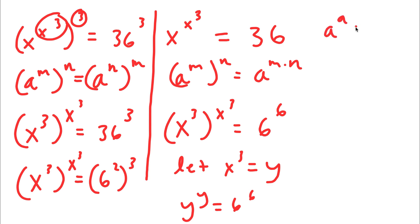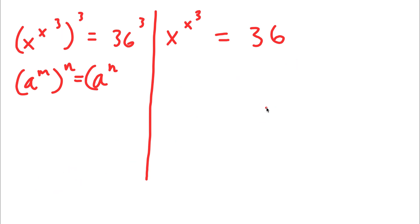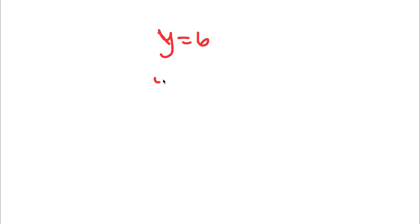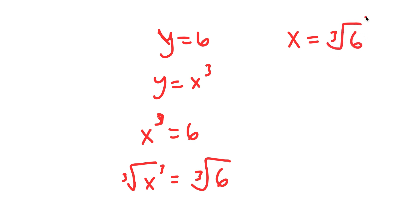If a to the power of a equals b to the power of b, then a equals b. So in this case y equals 6. Remember that y is also equal to x to the power of 3, so x to the power of 3 is equal to 6. Taking the cube root on both sides, the cube root of x to the power of 3 is simply x, so I'm left with x is equal to the cube root of 6.